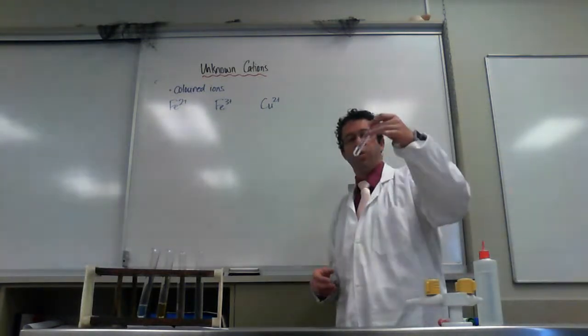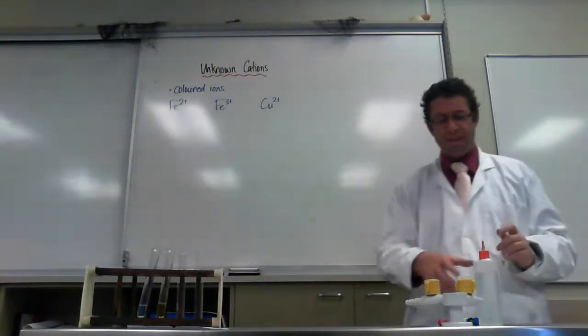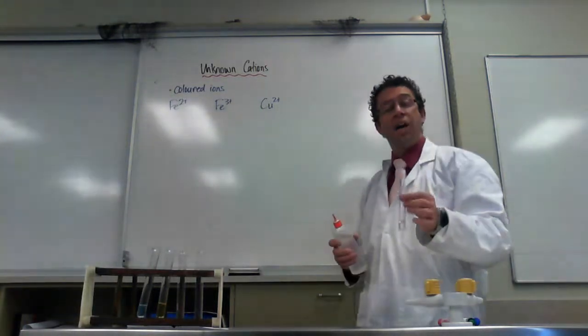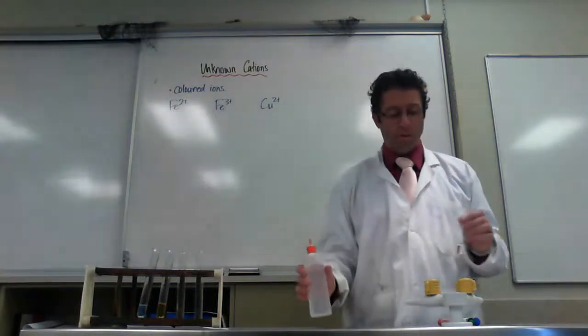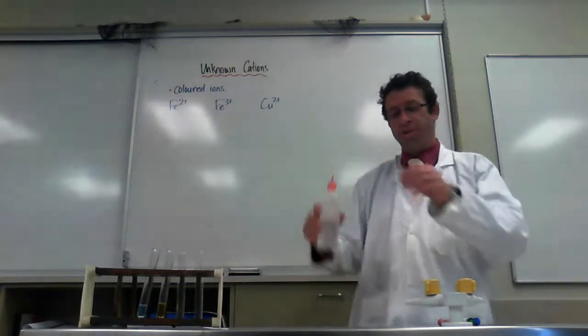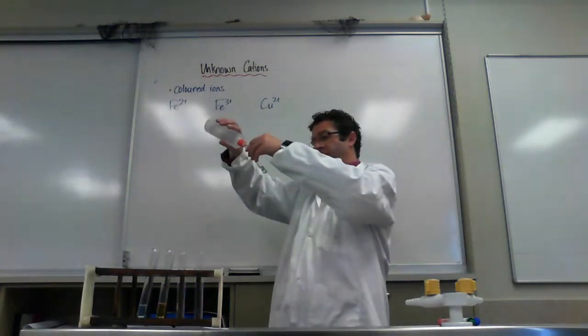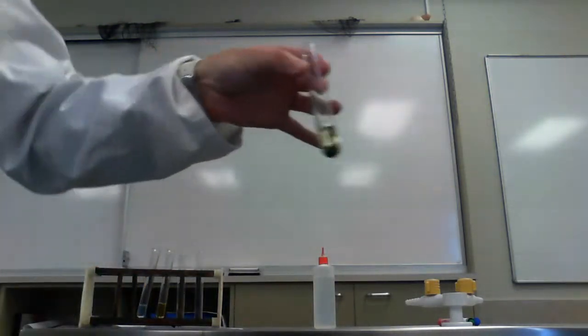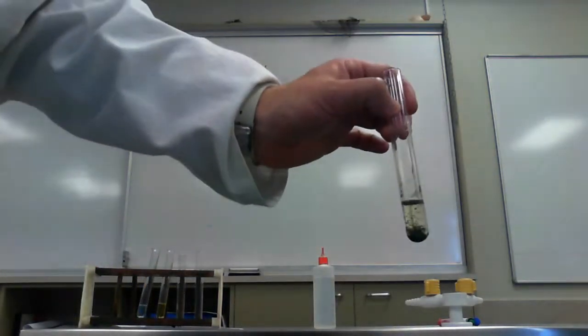So after you see the color of it, you would think that's Iron 2+ because it's a pale green color. How do we confirm it? Well, the most useful chemical for us here is going to be sodium hydroxide. And with that we see that we get a green precipitate there.